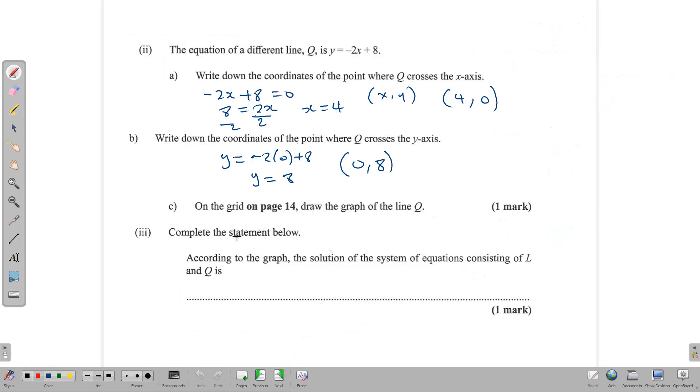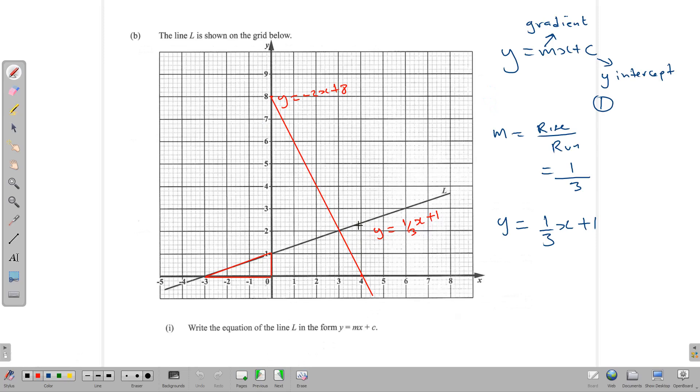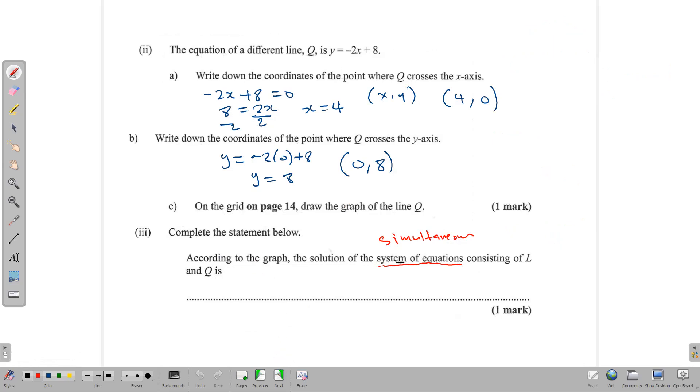Now that we've drawn in our line, complete the statement below. According to the graph, the solution of the system of equations consisting of L and Q is... Once you say system of equations, it's literally talking simultaneous equations. What you're actually doing is solving a pair of simultaneous equations using the graphical method. The solution is right here where the two straight lines meet. That point there is 3, 2. According to the graph, the solution for the system of equations consisting of line L and line Q is 3, 2, which means at the point where x equals 3 and y equals 2. So if you were to solve a pair of simultaneous equations using the two equations we have, that's what we would get: x equal 3 and y equal 2.